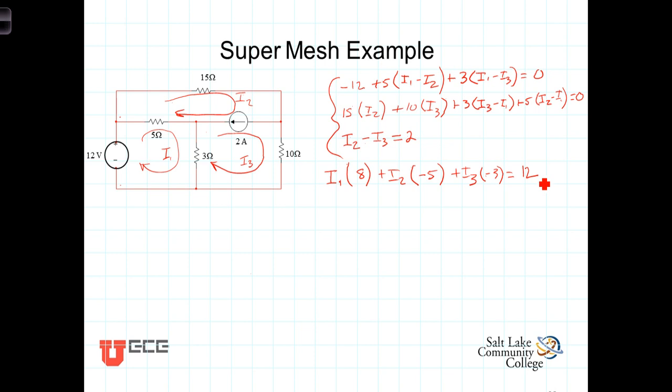Second equation, combining like terms, we have I1, and in this we have a negative 3 and a negative 5, that makes negative 8 times I1 plus I2 times, we've got 15, plus 5 is 20, times I2.